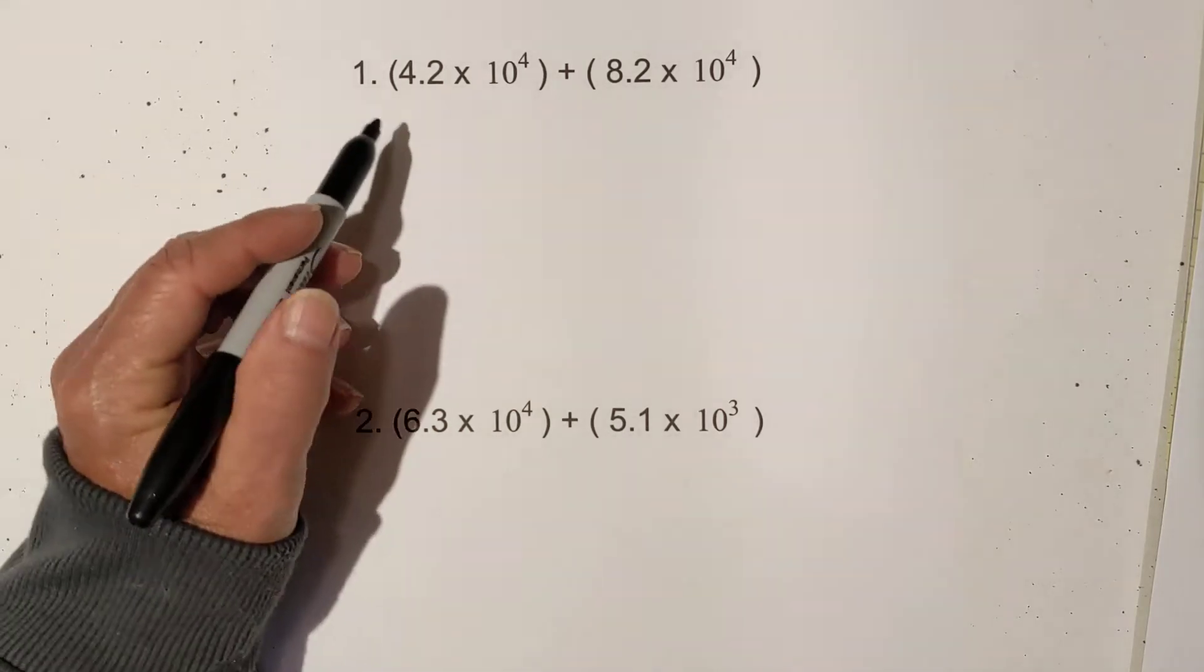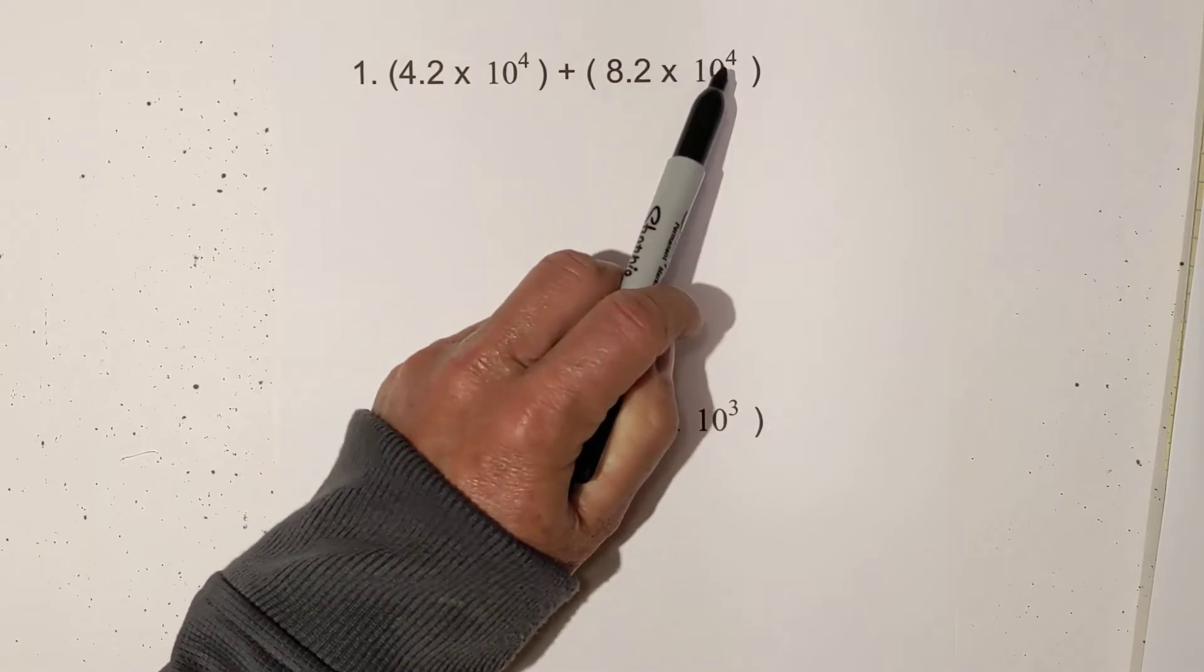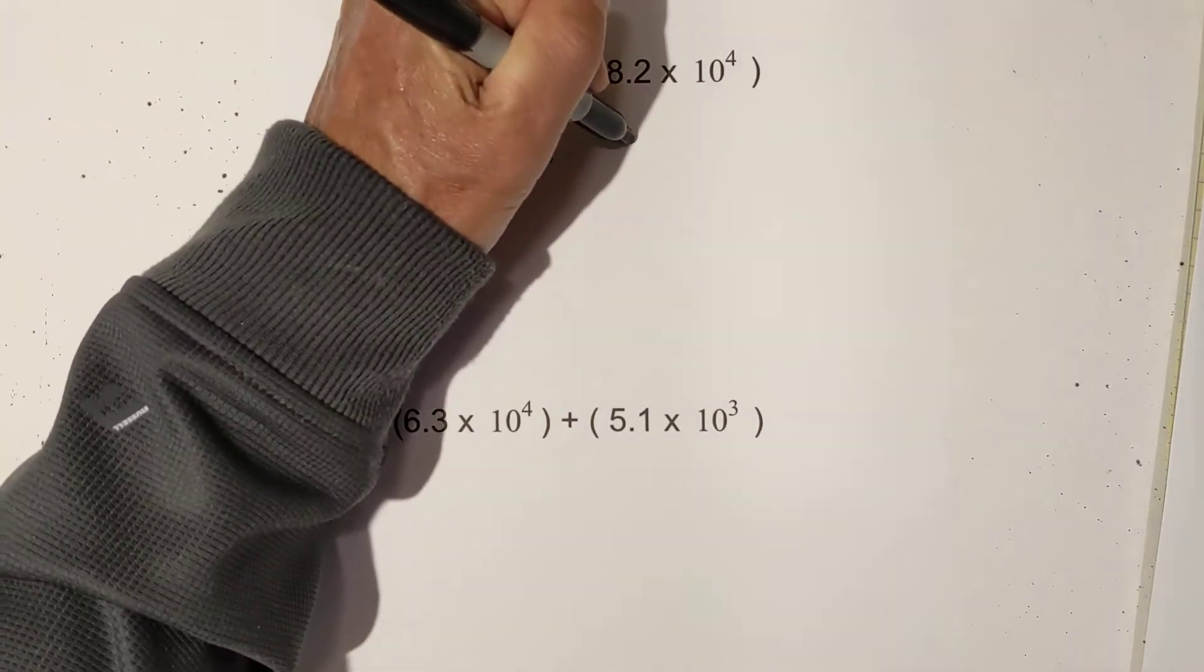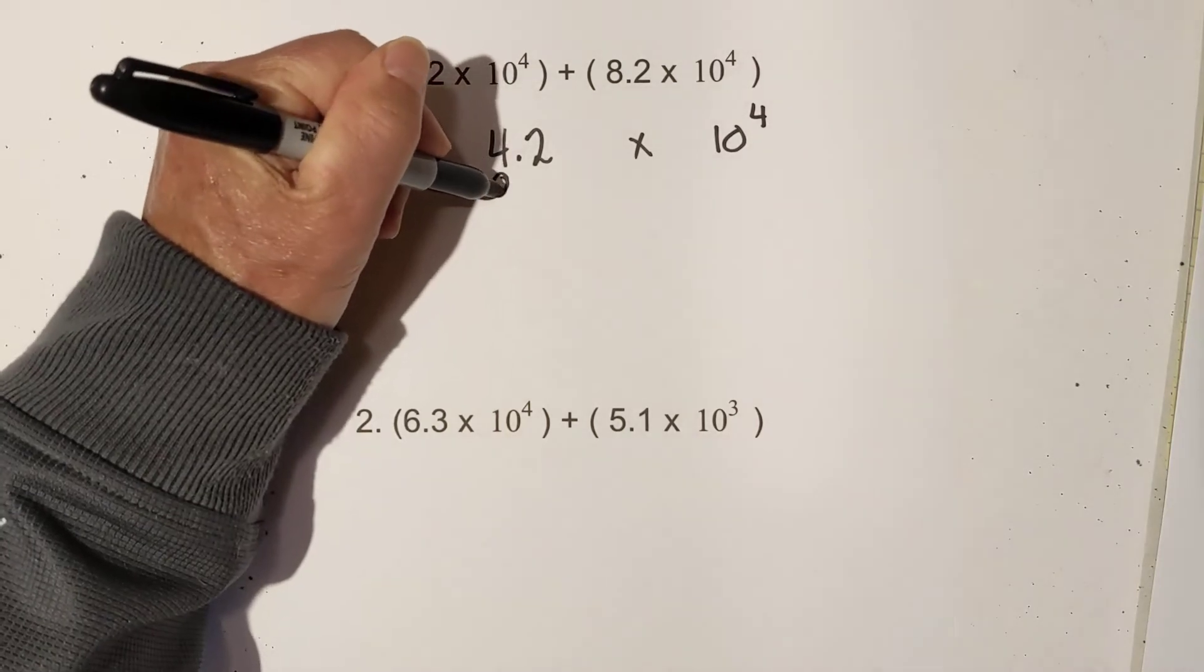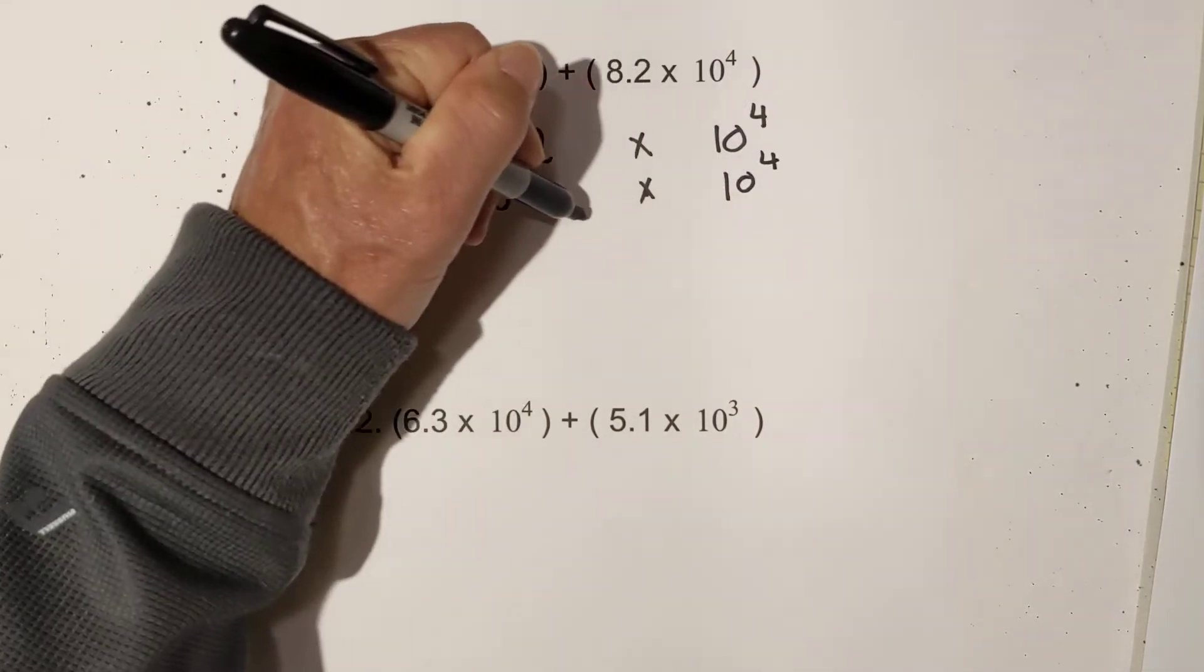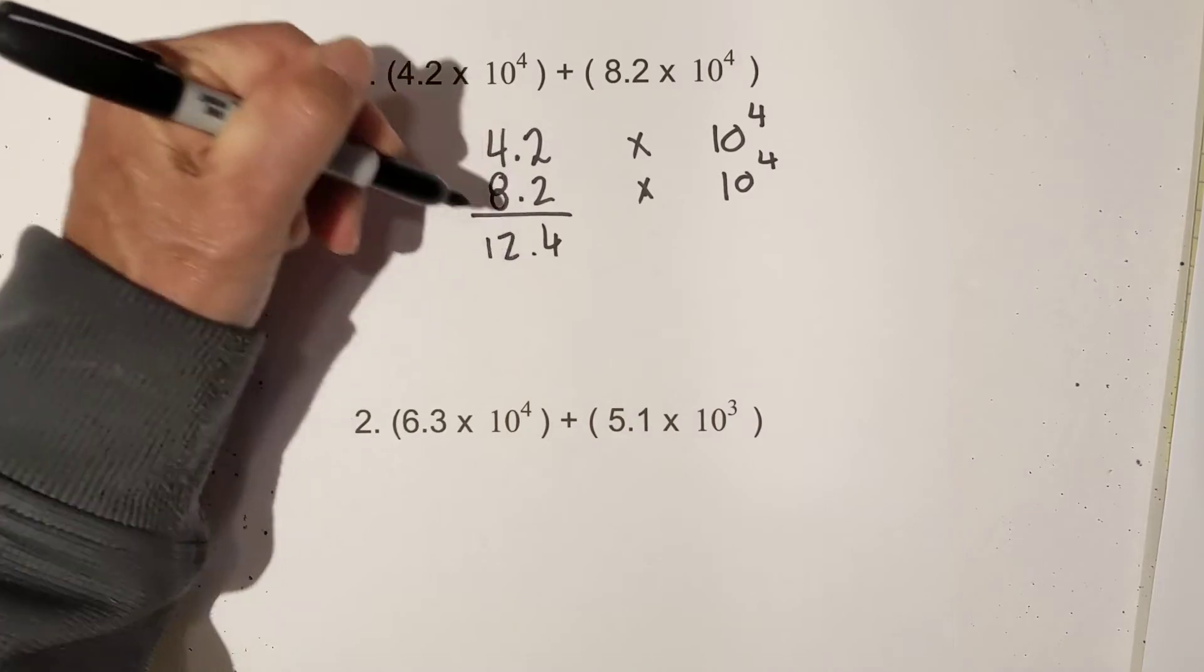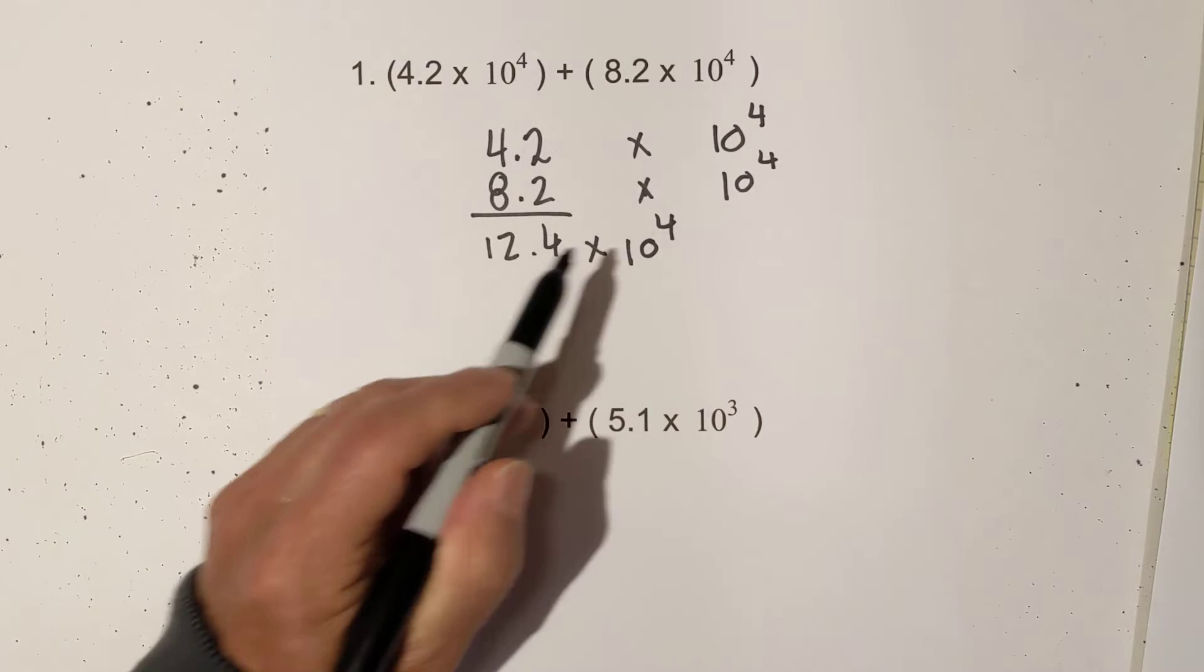So rule number one is in order to add, the two exponents need to be the same. So this one is pretty straightforward because both of the exponents are to the fourth. So I just go ahead and add them and the exponent stays the same. So this becomes a 4, this becomes a 12, so it's 12.4 times 10 to the fourth.